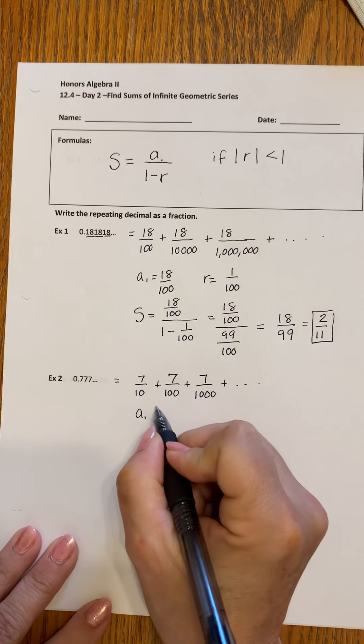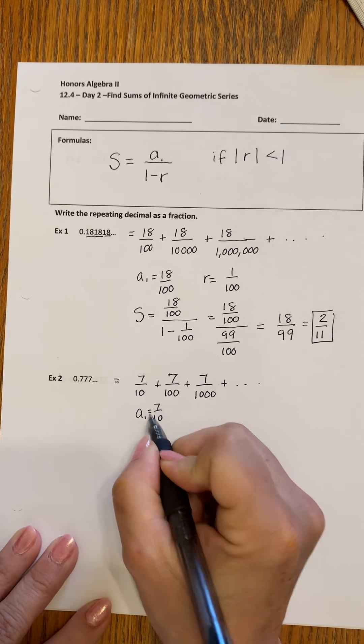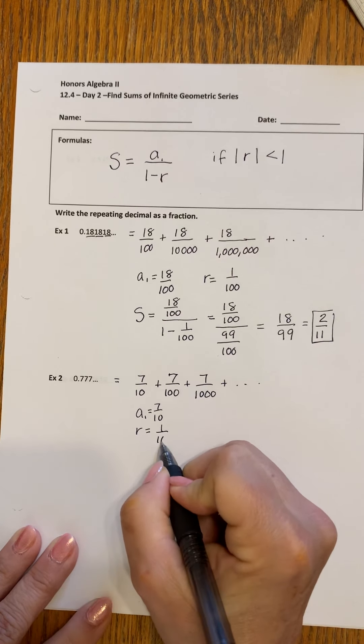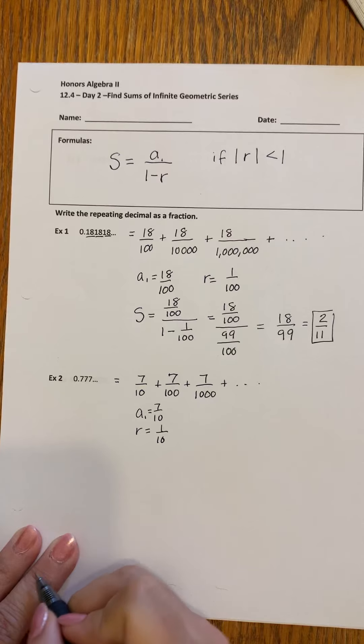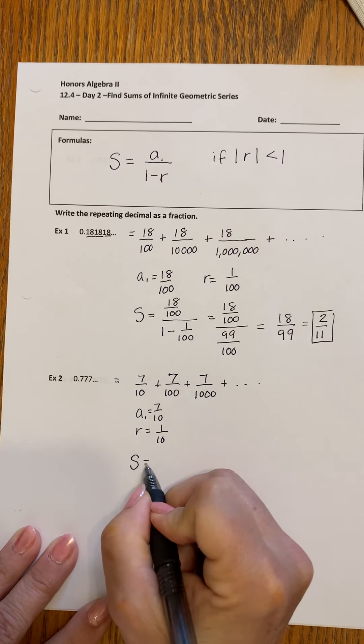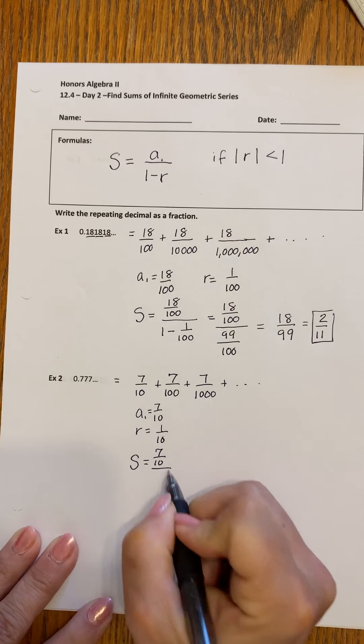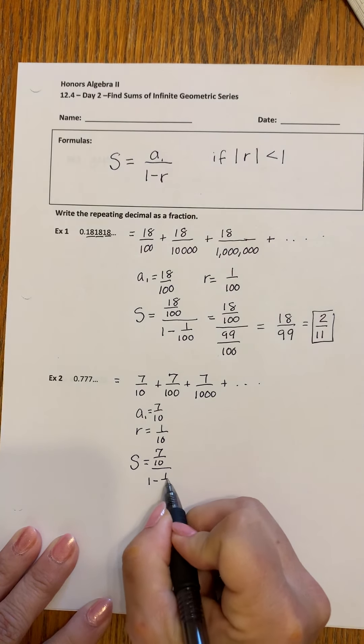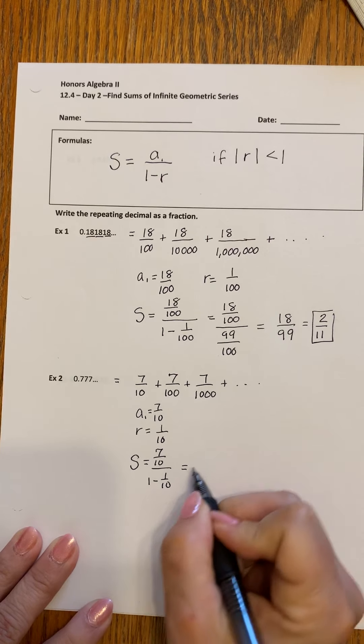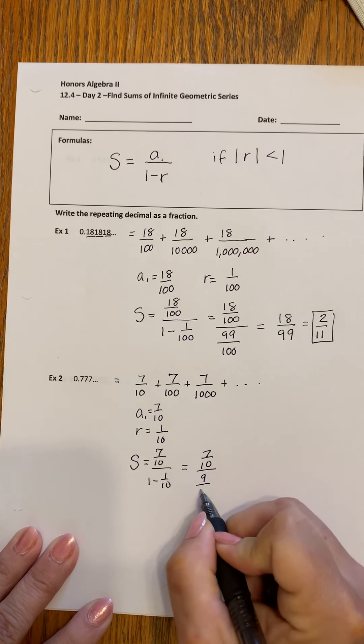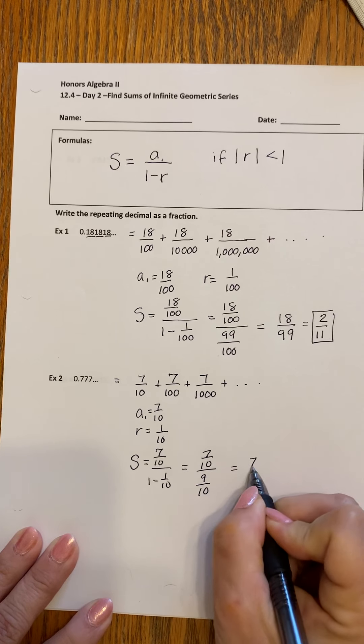The first term is 7 tenths. The ratio is 1 over 10. Multiplying by a tenth each time. Plugging into our formula, we're going to have 7 tenths divided by 1 minus 1 tenth. It's going to be 7 tenths over 9 tenths. Which is 7 ninths.